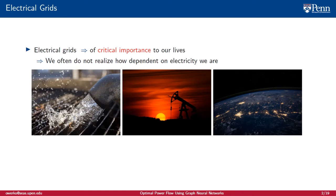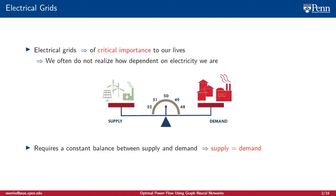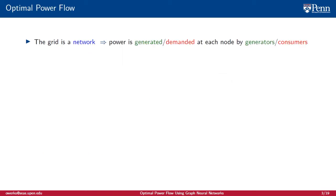Unsurprisingly, the grid is a complex system, one that requires a constant balance between electricity supply and demand. The grid is a network, and at each node, power is either generated or demanded.